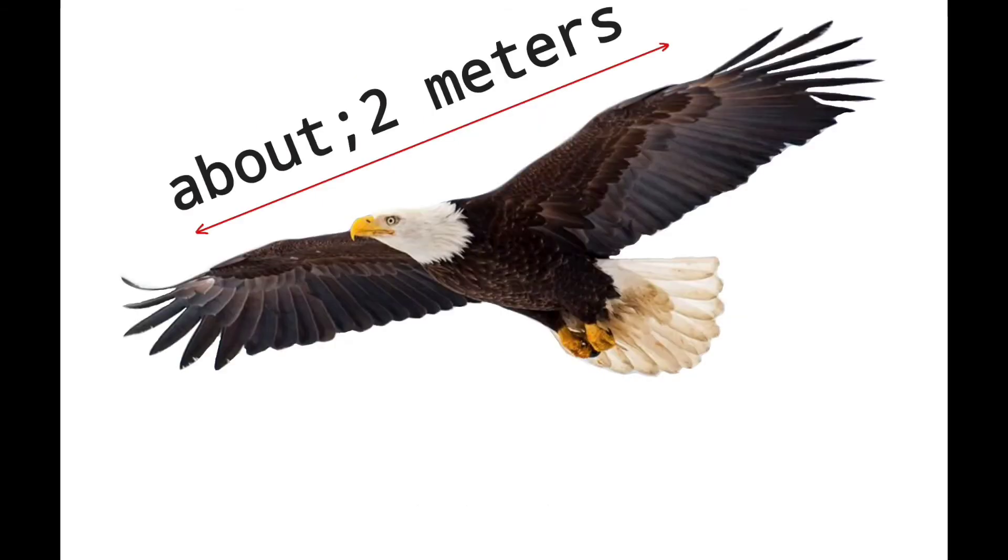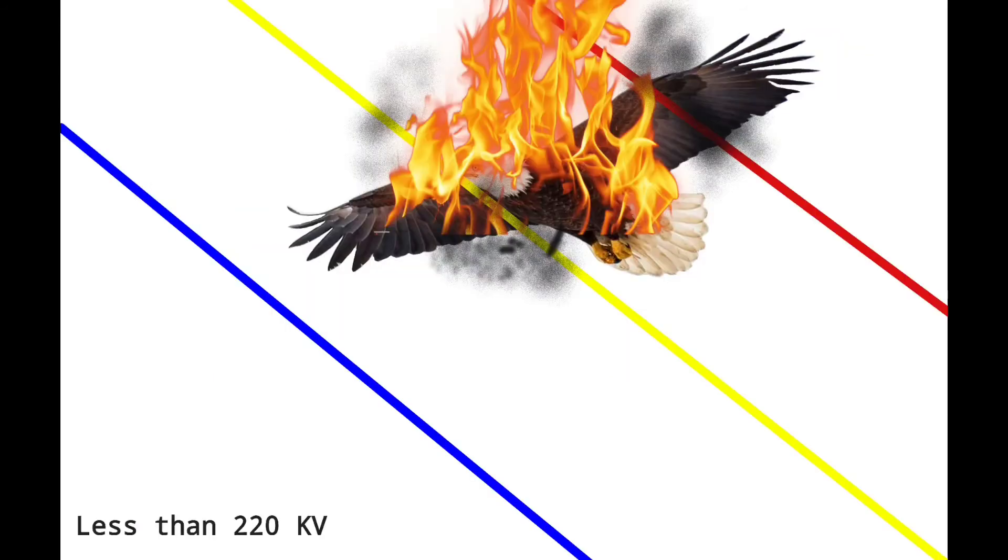And in case of big birds like eagles, they fall in danger most of the time. When an eagle expands its wing, it is approximately two meters. Look here, the bird is stuck between two phases and burns himself. Yes, it is true, it may happen anytime with the birds. When a bird gets electrocuted, then its body can be burned if it is high voltage. At that time, the bird acts as a load.